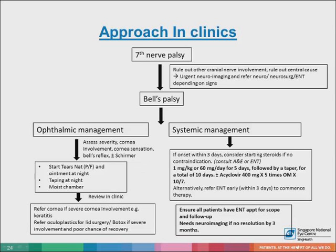When you see a patient referred for seventh nerve palsy in the clinic, ECS, or the ANE, the approach should include a proper history, full examination to rule out other cranial nerve involvement, and determine whether it is a central cause. If it is a central cause, urgent neuroimaging and referral to the relevant specialist is needed. Bell's palsy is a diagnosis of exclusion. If the patient presents within the first three days of onset, consider starting steroids with or without antivirals. If the patient has had this problem for about two weeks, there is no real proven benefit in starting treatment so late.